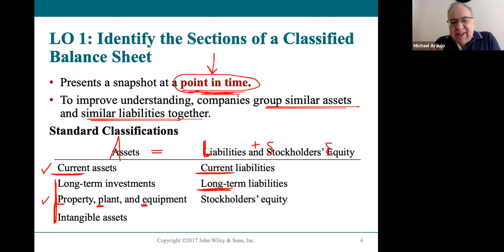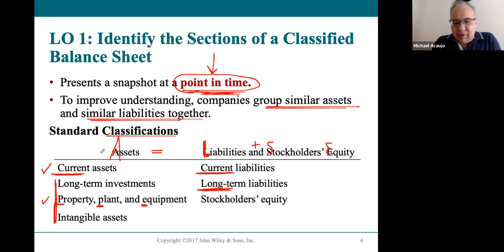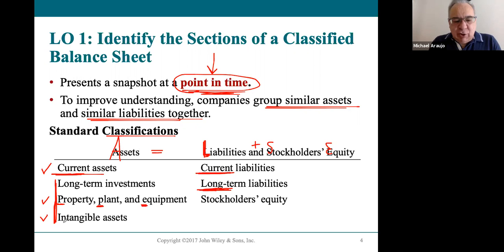Every single business is going to have at least those two types of asset classifications: current assets and property, plant, and equipment — guaranteed. Other businesses will have something called an intangible asset.